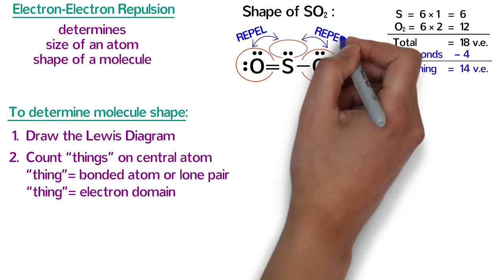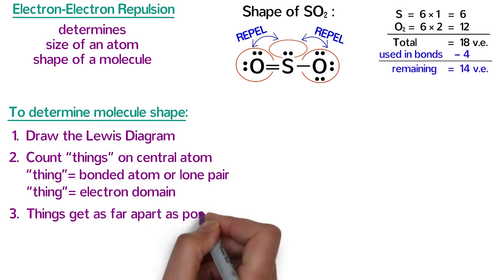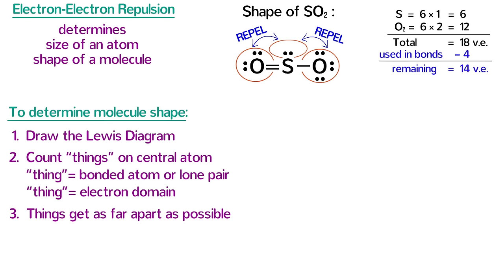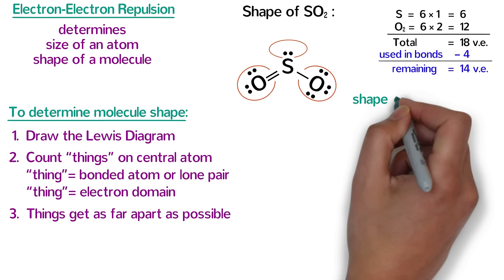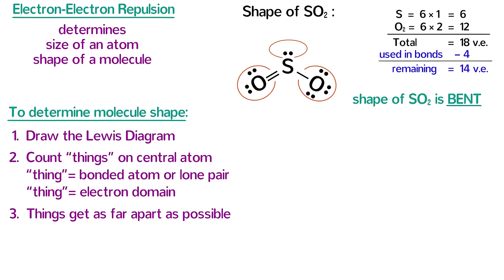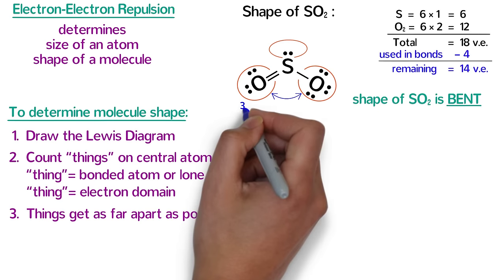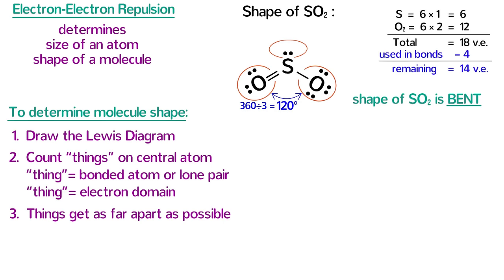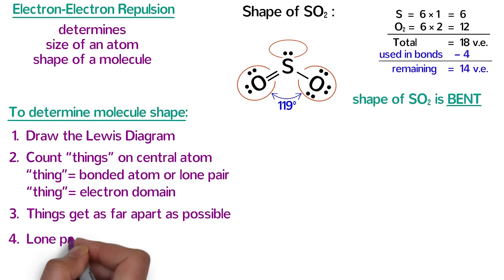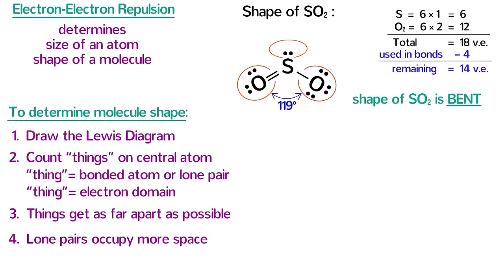Those three things will repel each other and get as far apart as possible. That repulsion with the lone pair of electrons will cause the two oxygens to bend down, so the resulting shape of SO2 is called bent. Since there are three things attached to the central atom, we would expect the bond angle to be 360 divided by 3, or 120 degrees. In fact, the real bond angle is slightly less than that — it is 119 degrees — because lone pairs occupy more space close to the central atom, while electrons in bonds are stretched out between the two bonding atoms.